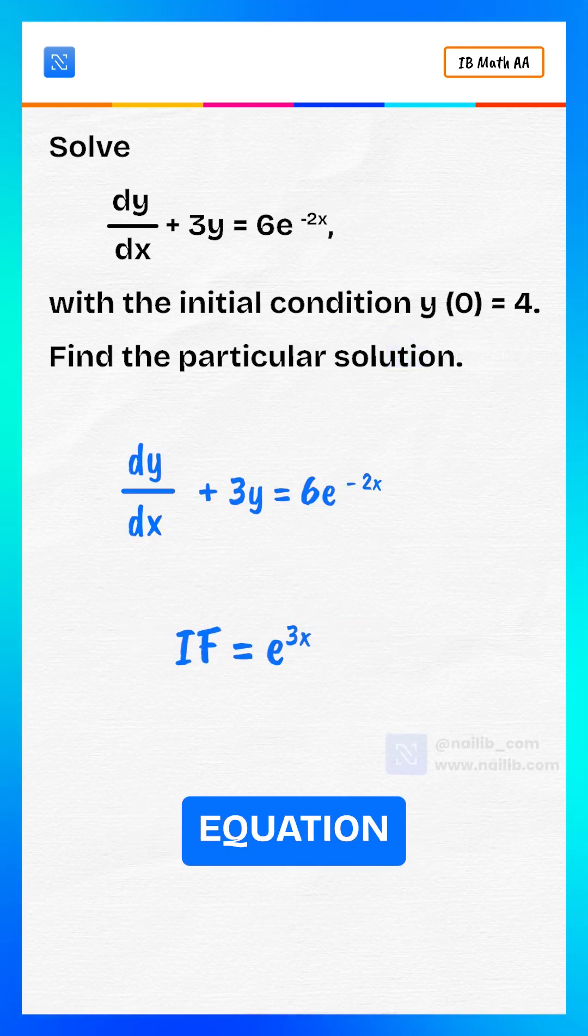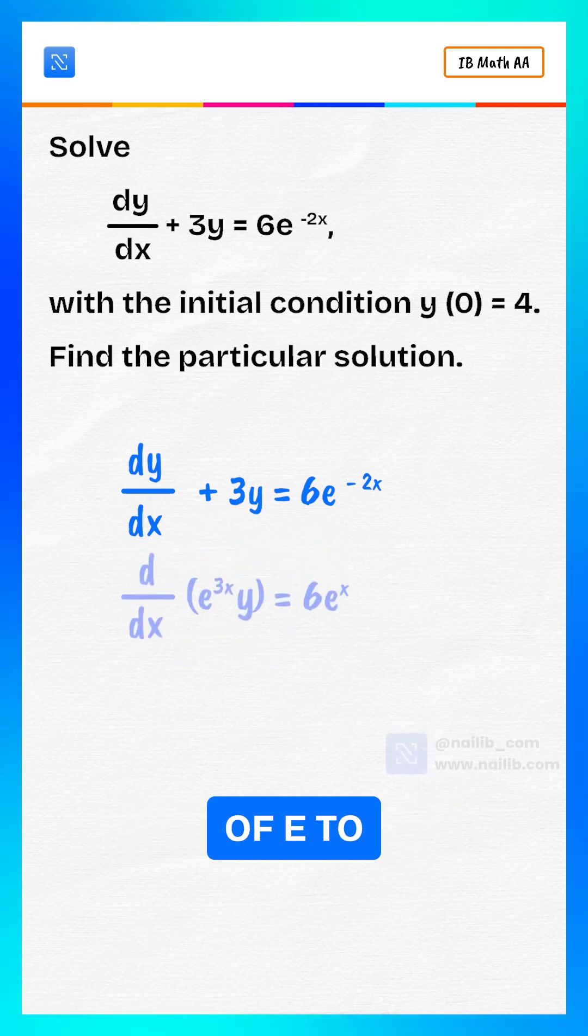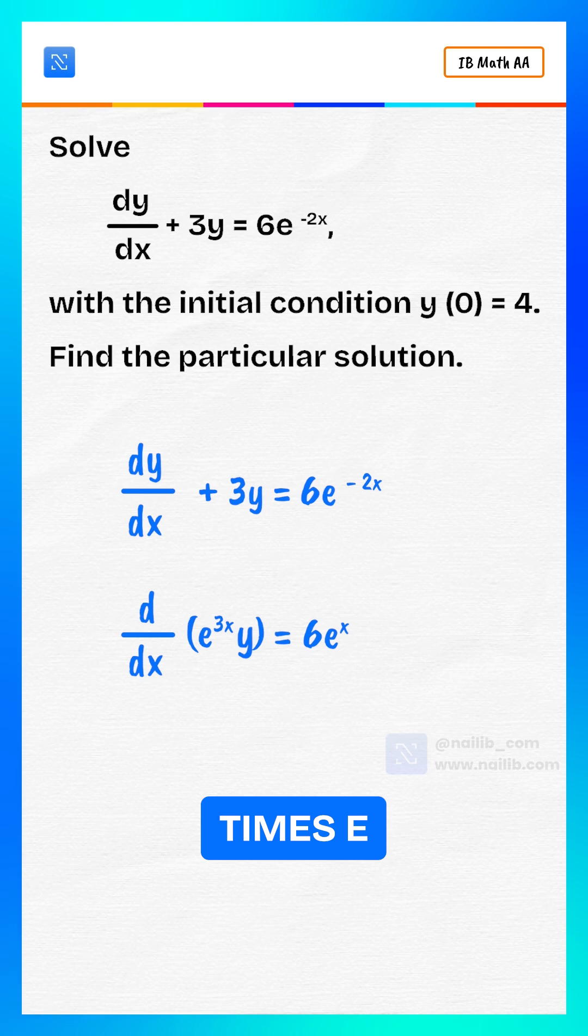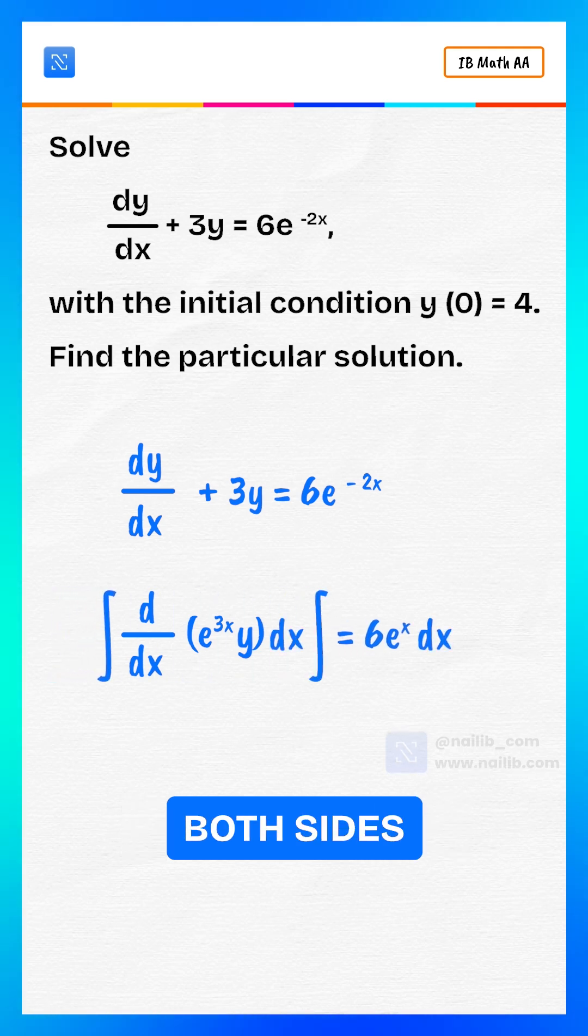Multiply the entire equation by the integrating factor. The derivative of e to the power 3x times y equals 6 times e to the power x. Now integrate both sides.